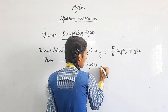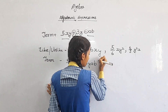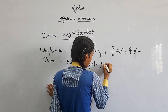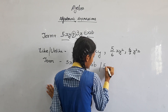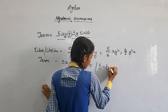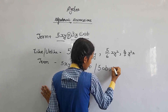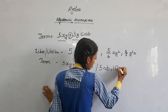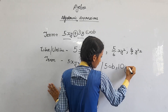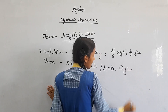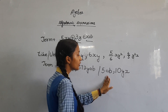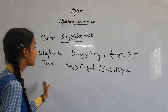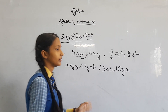Then we will get a second example. Here also the variables are not the same, so we will say that this is an unlike term.